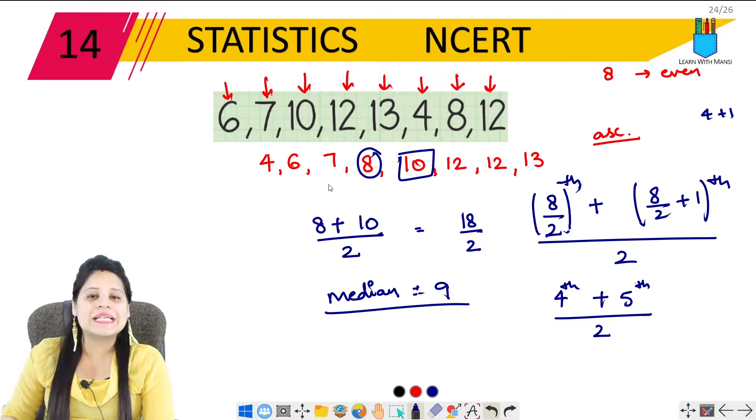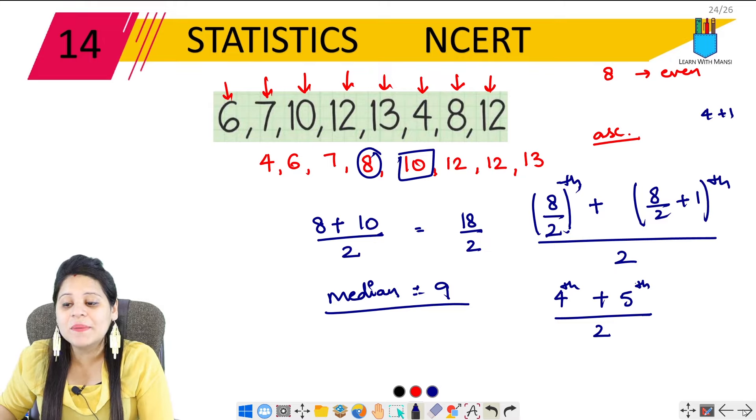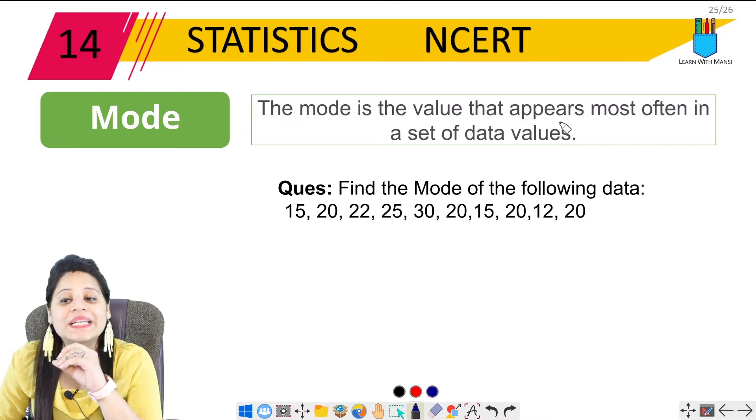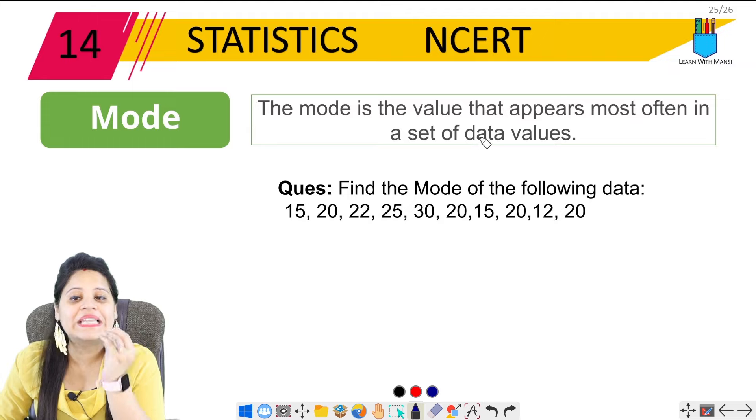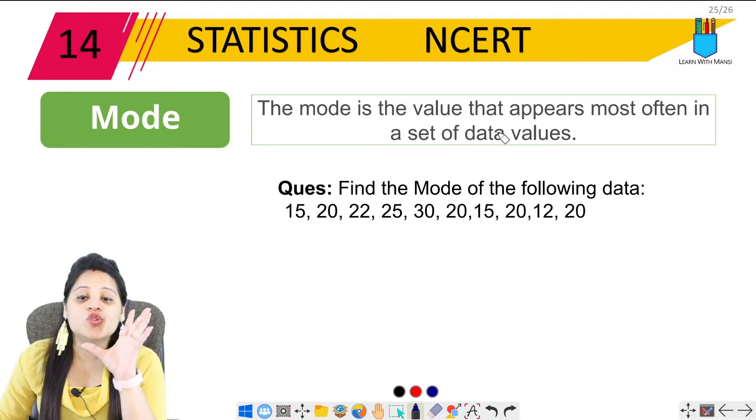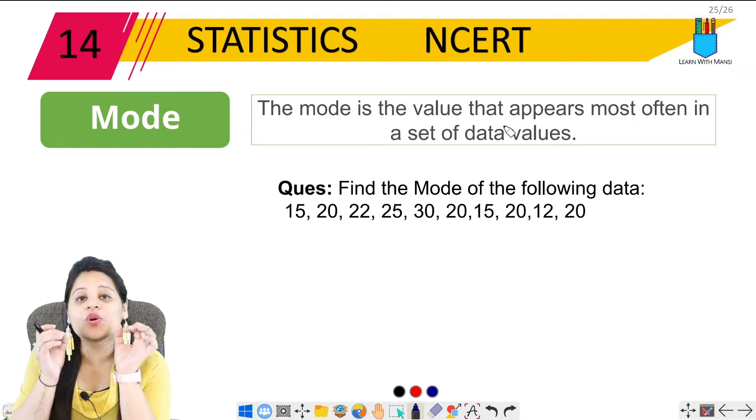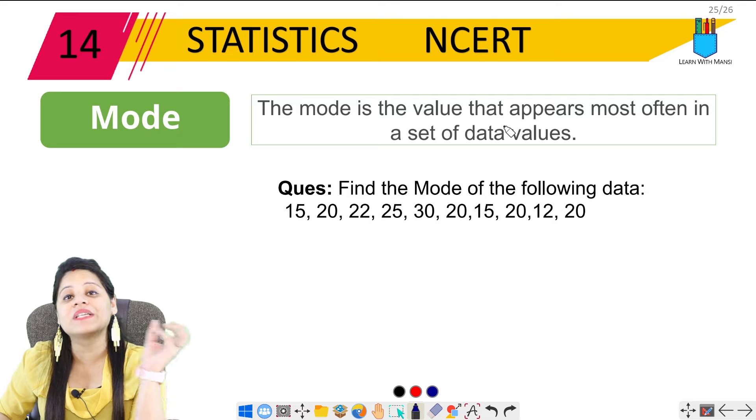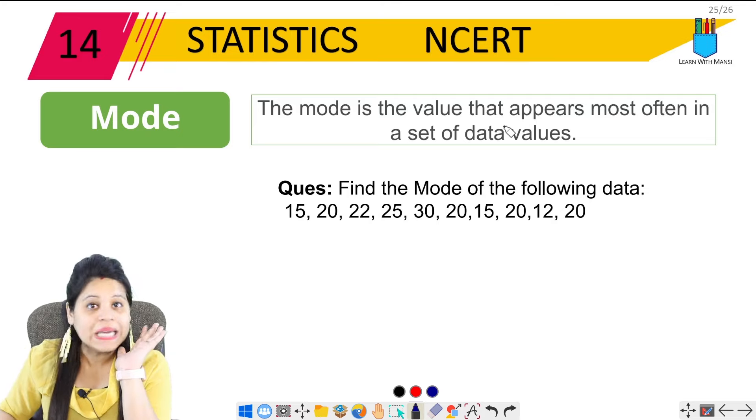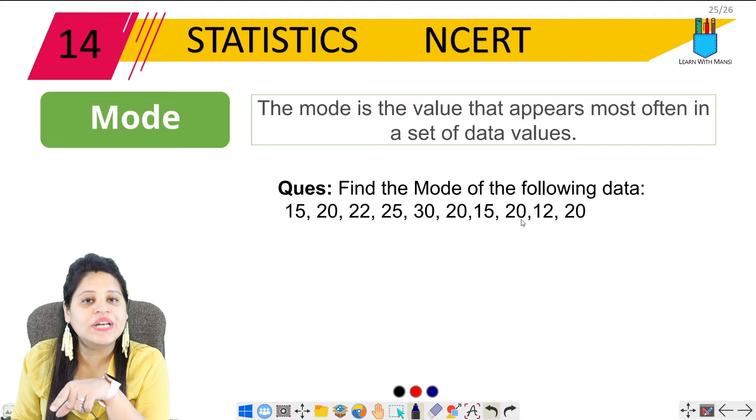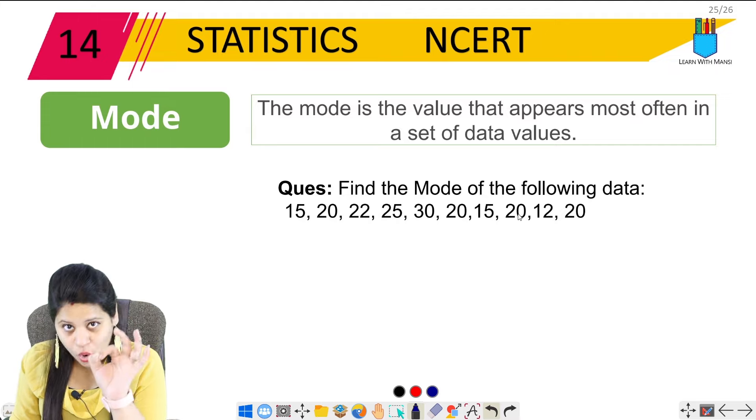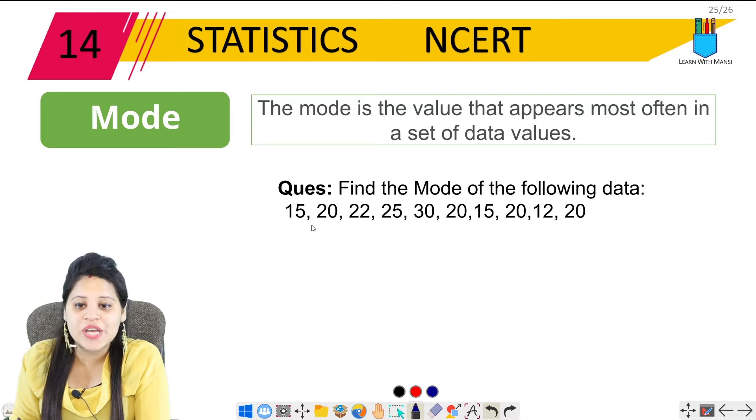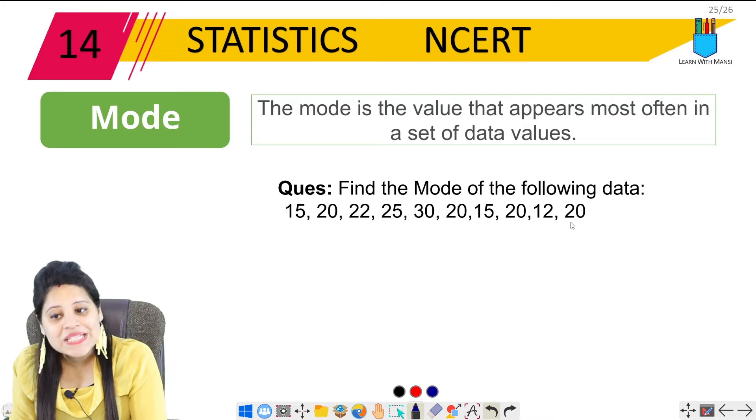Now last our topic: mode, which is the most easy. The mode is the value that appears most often in the set of data values. So mode, when you have the data, which number is the most repeated, or in simple ways which frequency is the most repeated. In one way, put it on ascending, it will be easier, or see which number is the most repeated.